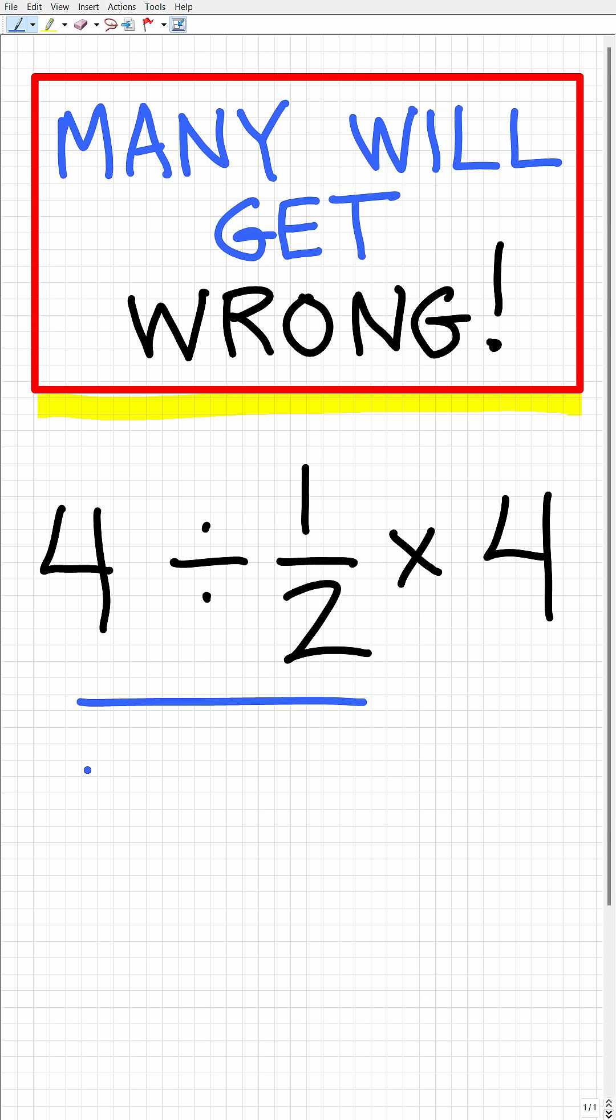Okay, so 4 divided by 1 half is equal to 4 times 2 over 1. So when you are dividing fractions, what you need to do is flip the fraction to the right of the division operator. Okay, so now we have 4 times 2 over 1.